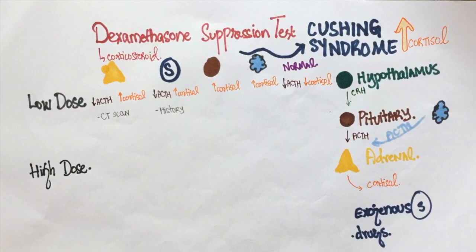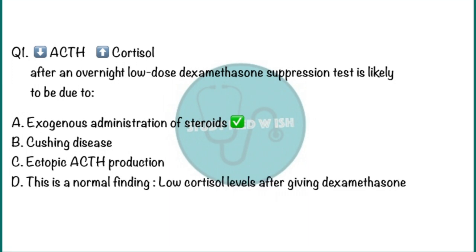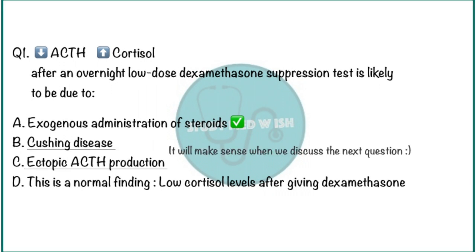These two conditions are independent of ACTH. So the correct answer is exogenous administration of steroids. Normal findings would have low cortisol levels. Cushing disease and ectopic ACTH productions will have high ACTH and high cortisol after an overnight low-dose dexamethasone suppression test.